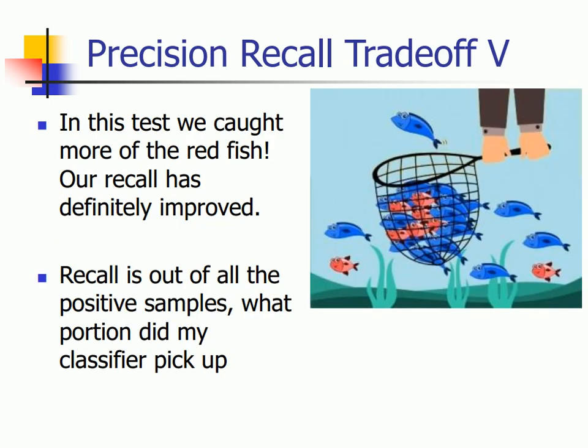In order to do that, I make a bigger fish net. I change the bait which is now liked by all the fishes, and I capture a lot of fishes now using the new bait. Recall is out of all the positive samples — what portion did my classifier pick up? If you see in this diagram carefully, approximately there are eight fishes, and out of eight I am able to capture six red fishes, which is doing a good job.